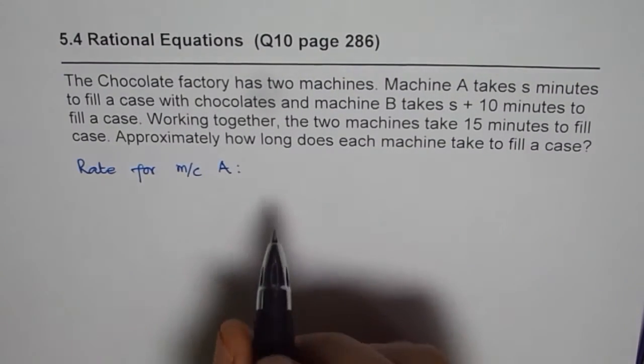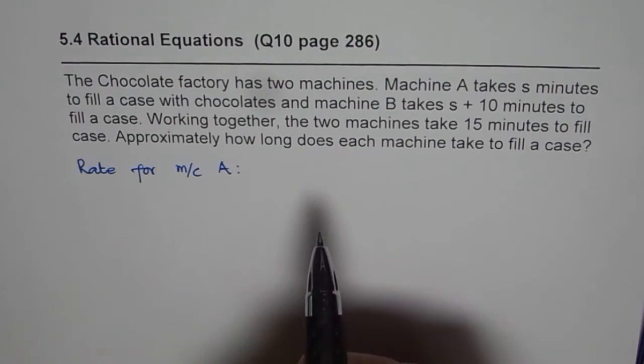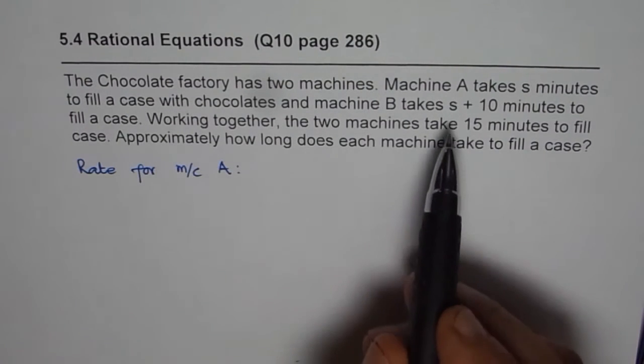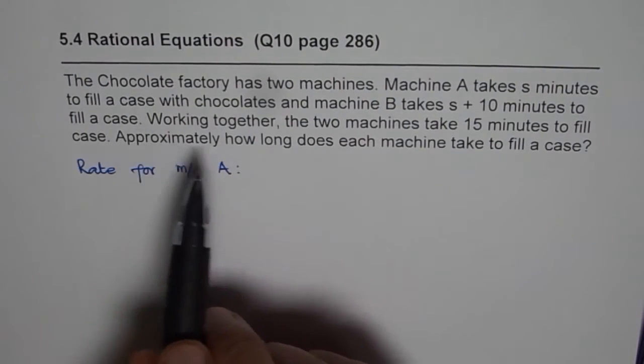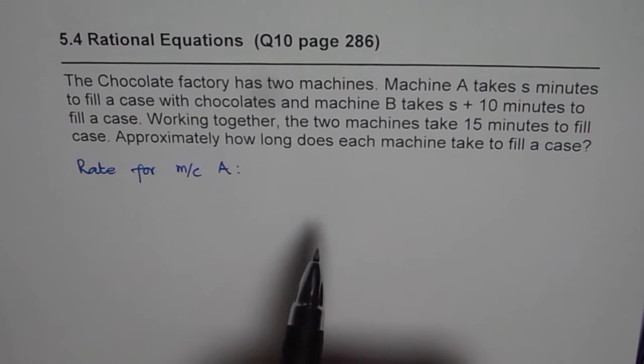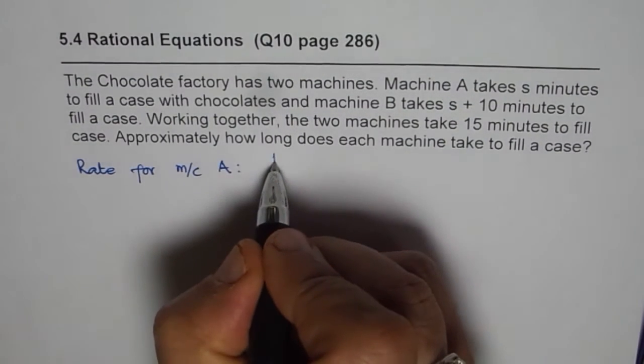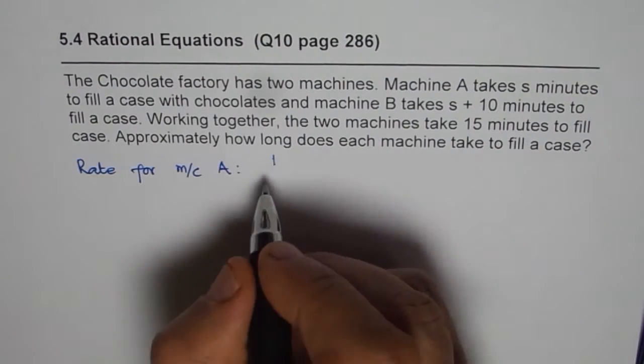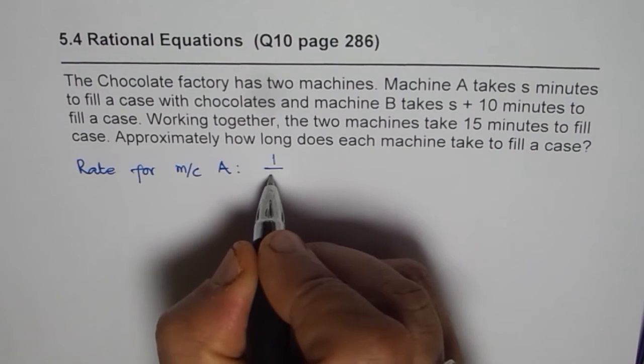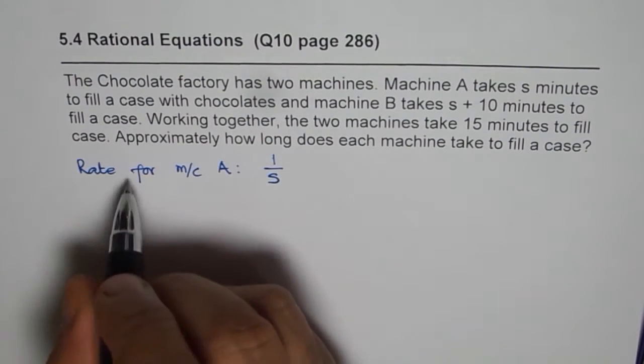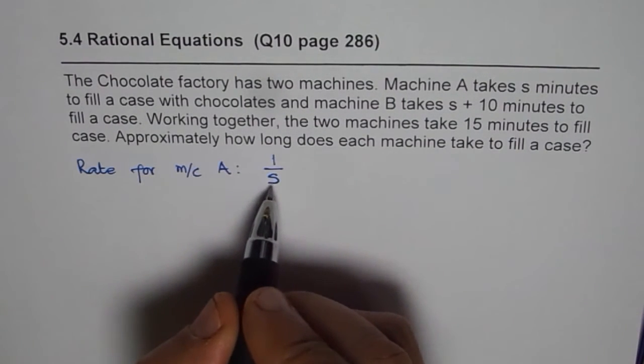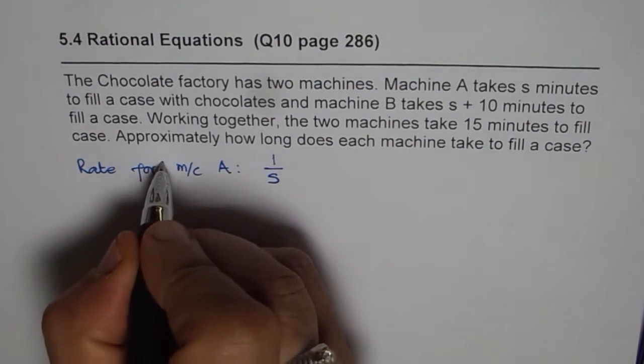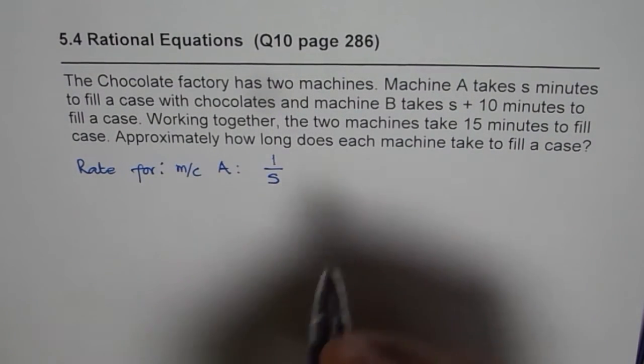Let us write down rate for machine A. Now rate for machine A is the quantity of job done over time taken. So the job done is filling one case, one whole case. And time taken by machine A is s minutes. So the rate for the machine A is 1 over s.